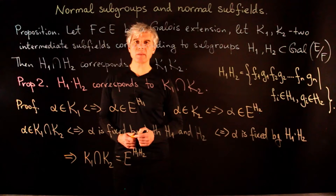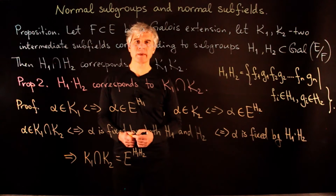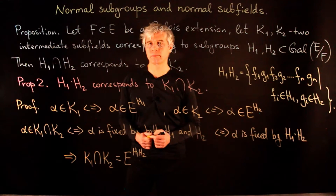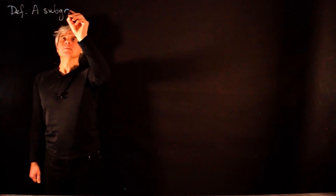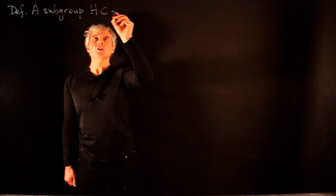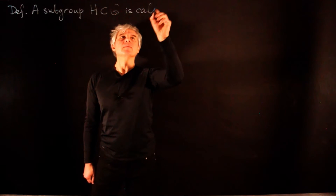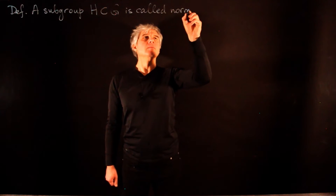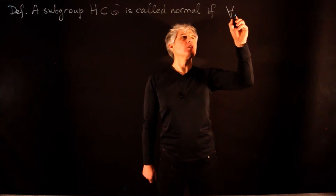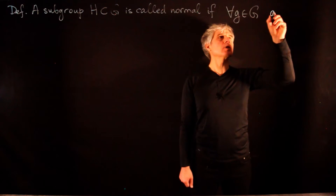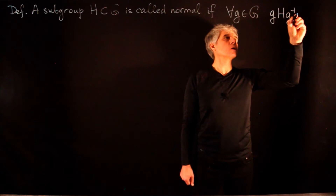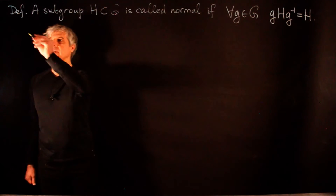Our next theorem is the main result of this lecture and it says that if the intermediate field k is normal over F, then the corresponding subgroup H is a normal subgroup in the Galois group of E over F. Recall that a subgroup H in G is called normal if for every g in G the conjugate g·H·g⁻¹ equals H.